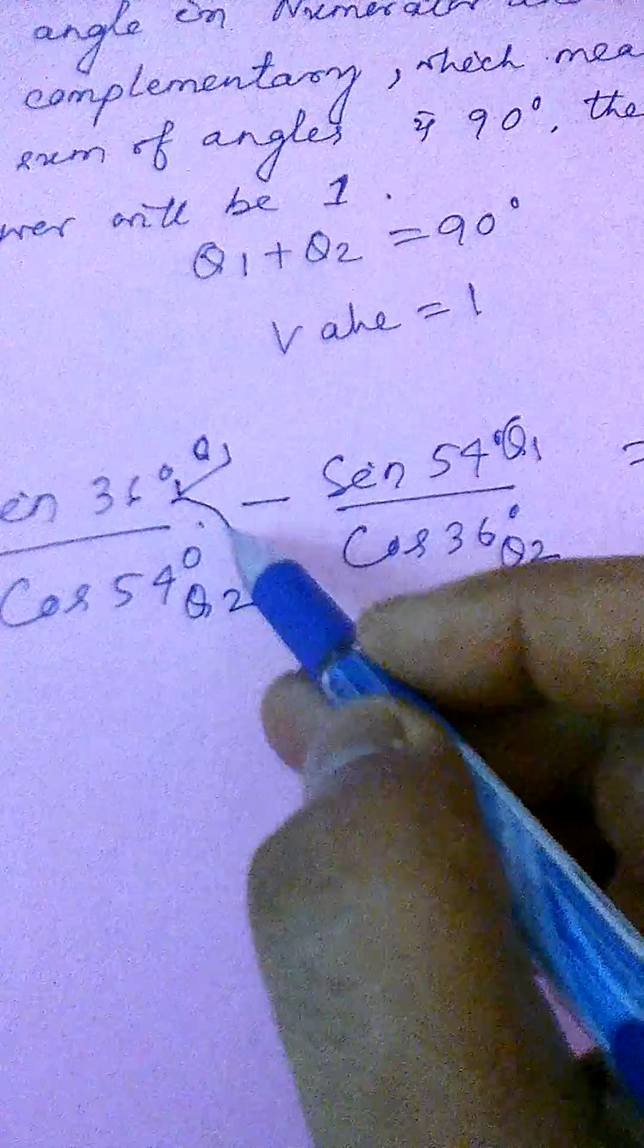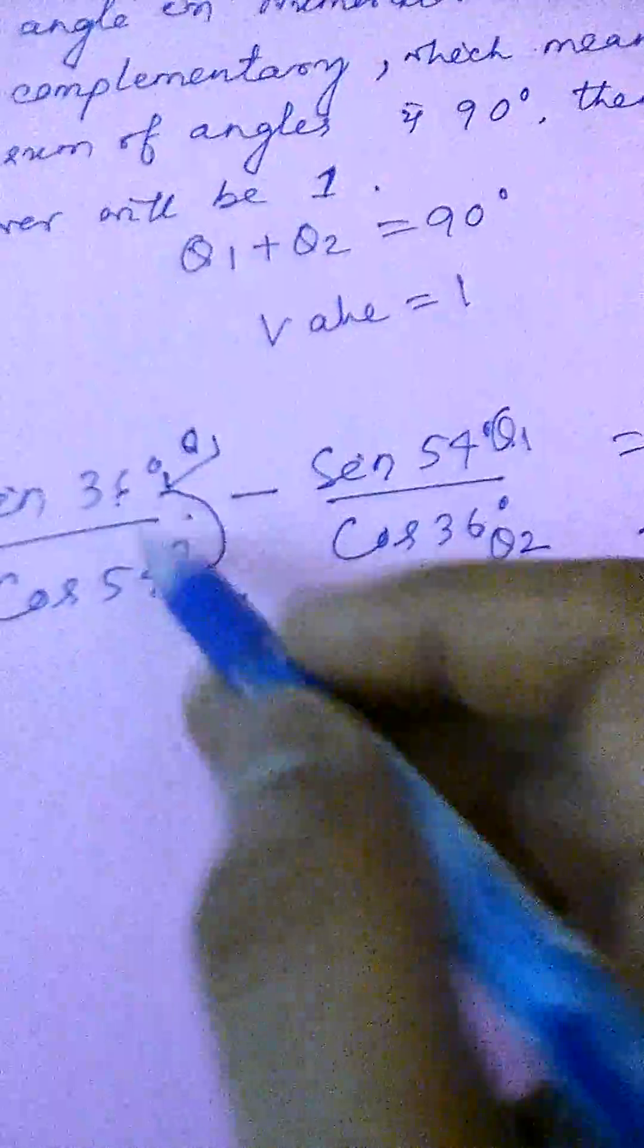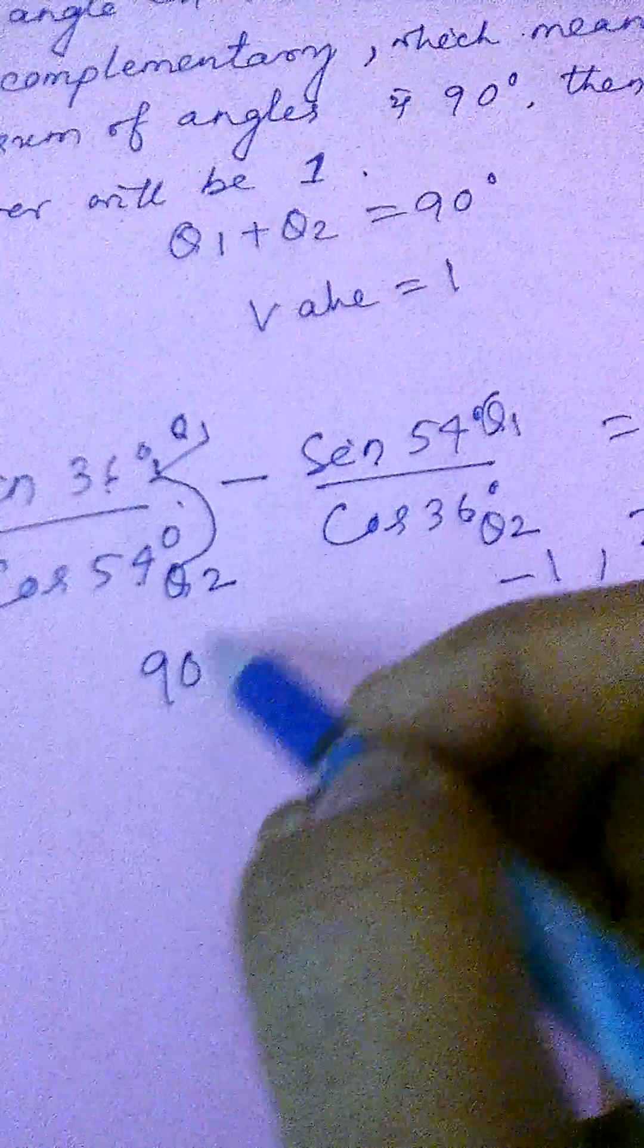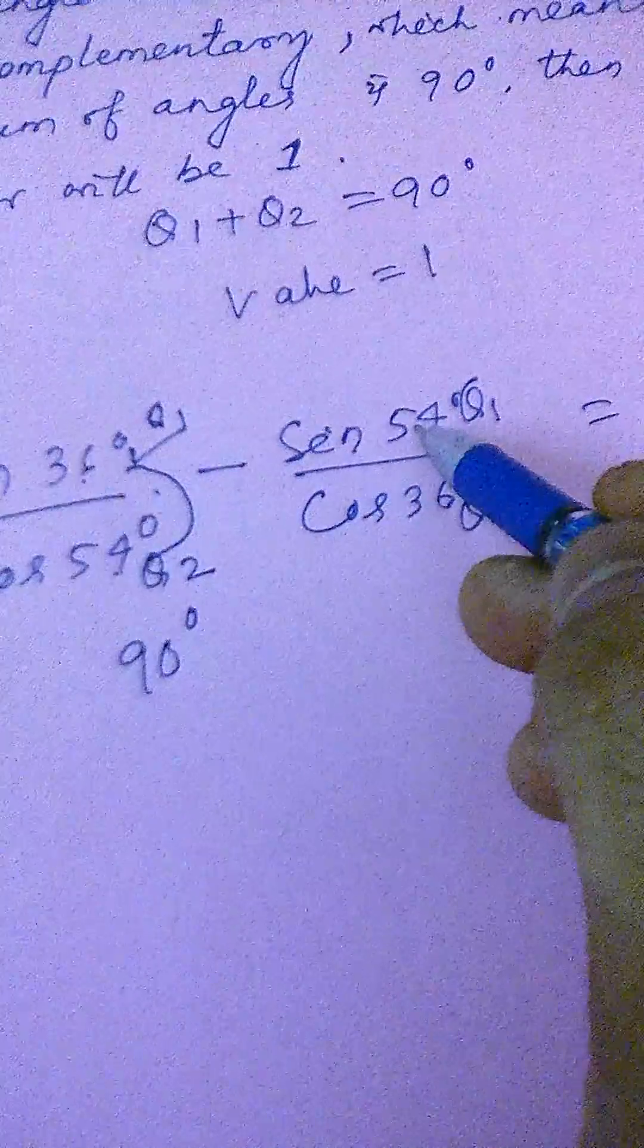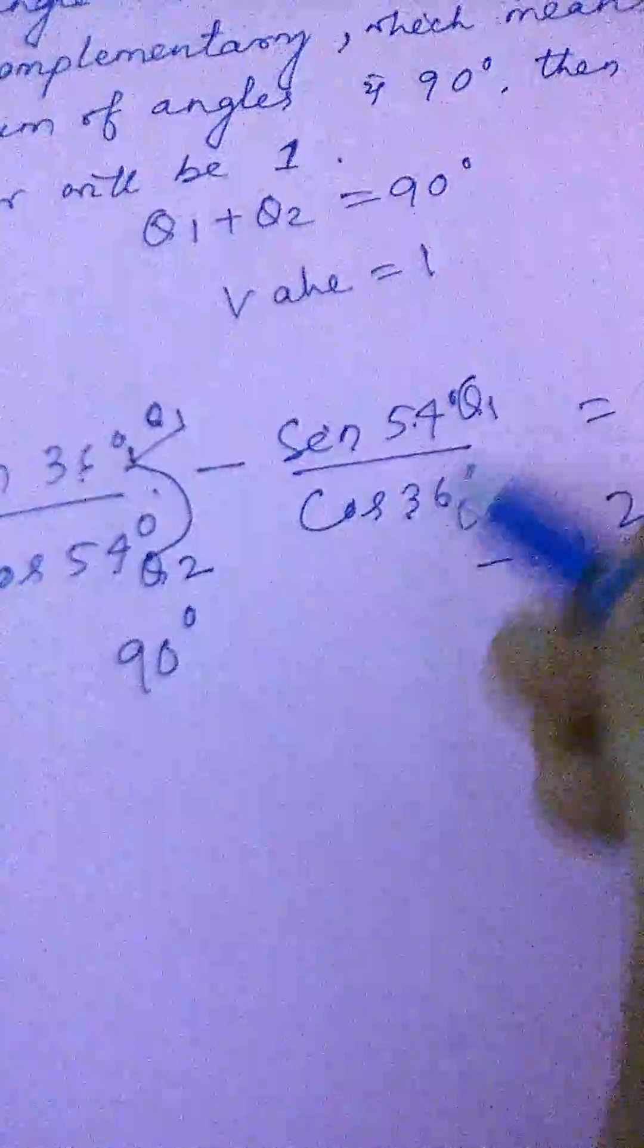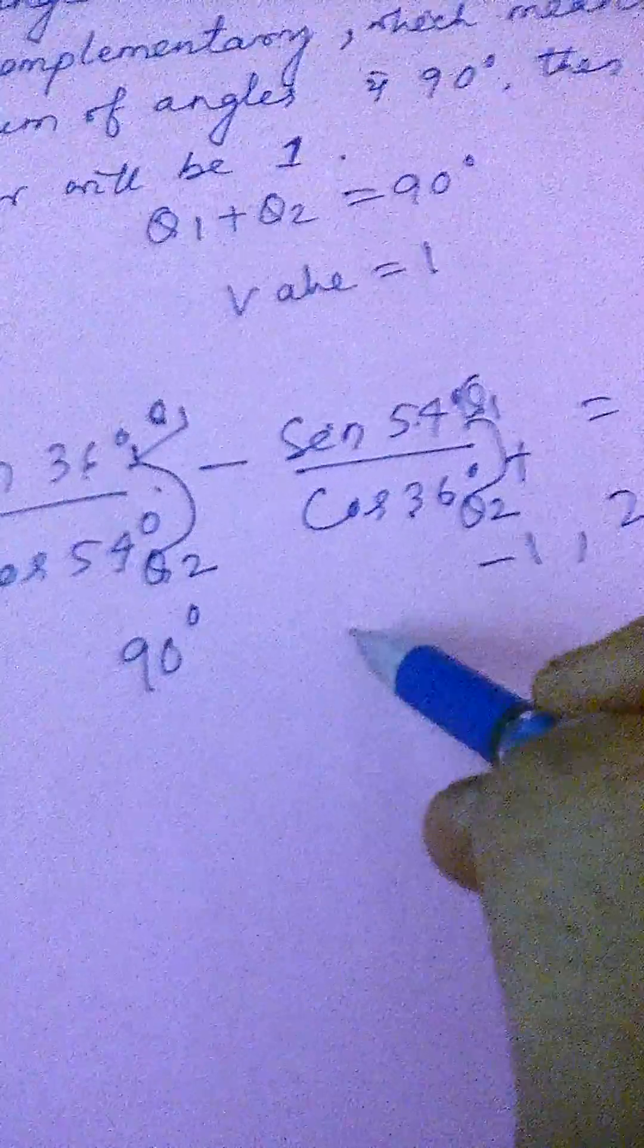Just add this one. How much? 36 plus 54, 90. And this one, 54 degree plus 36 degree. If you add this, you will find 90.